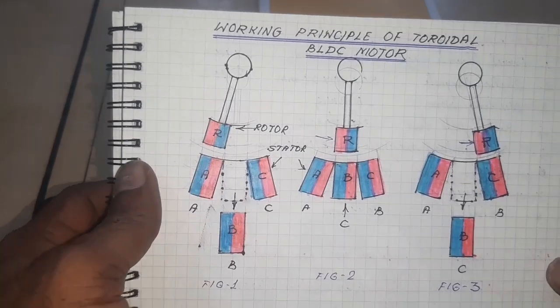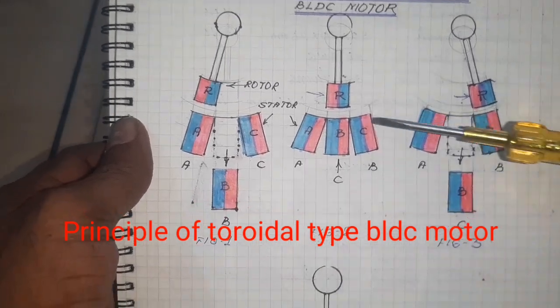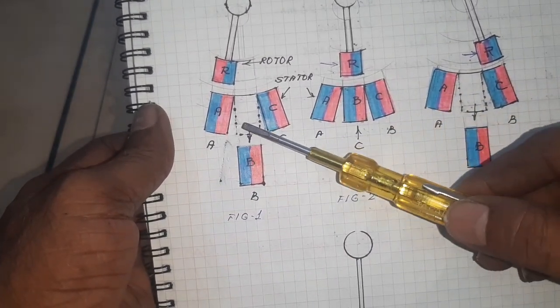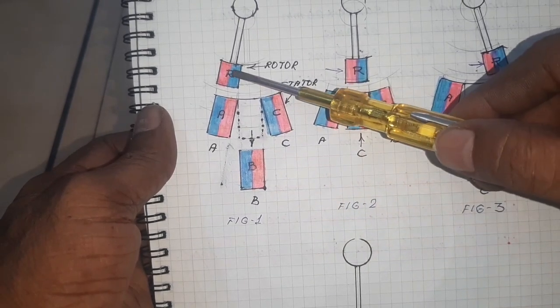Now I am going to explain the working principle of the toroidal BLDC motor. Look at the picture, here I am using stator 3 magnets and rotor 1 magnet.